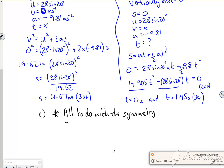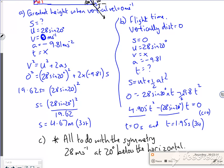So it's 28 meters per second at 20 degrees below the horizontal. I'm only doing this very sneakily because of the symmetry. If it wasn't landing in line with it, I can't do that.